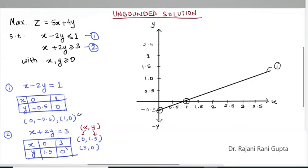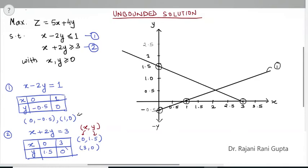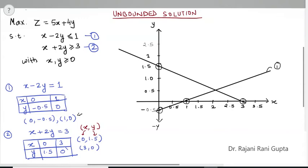For constraint 2, the points are (0, 1.5) where x = 0 and y = 1.5, and (3, 0) where y = 0 and x = 3. We join these with a line. This is the line for constraint 2.